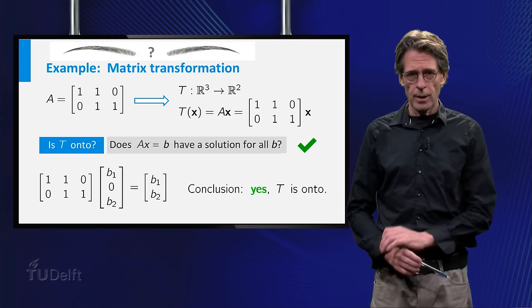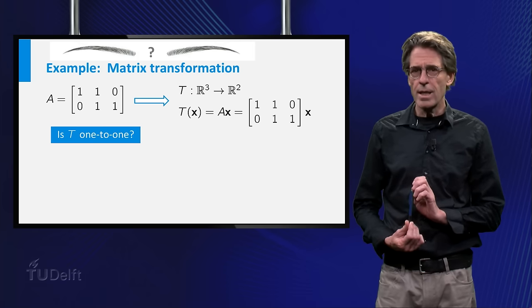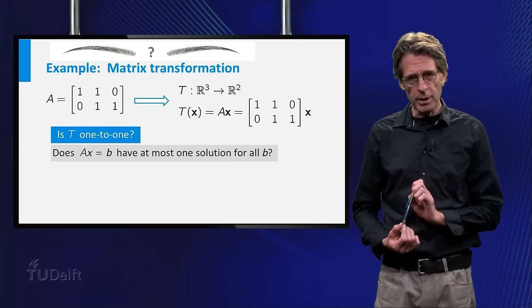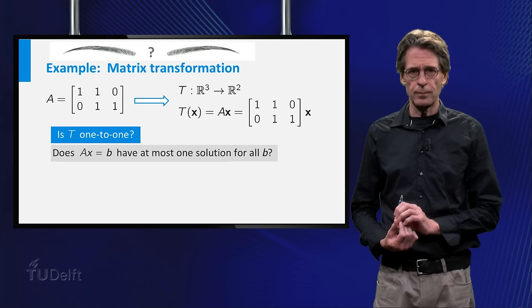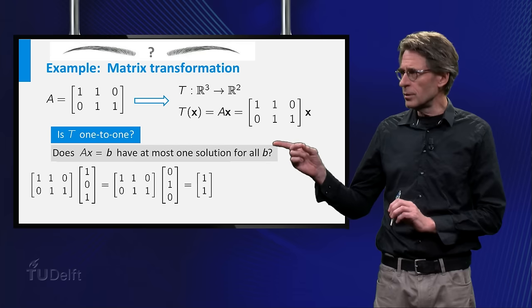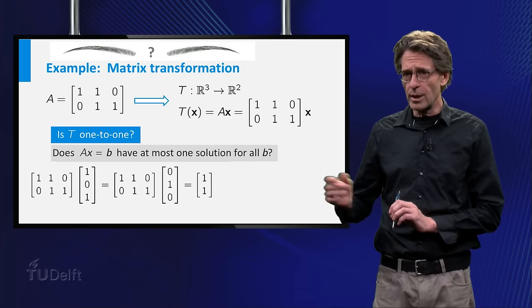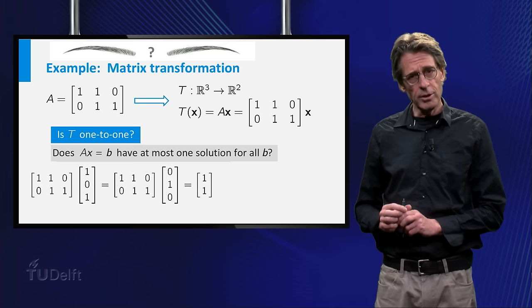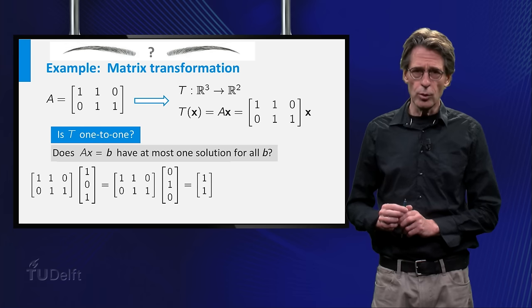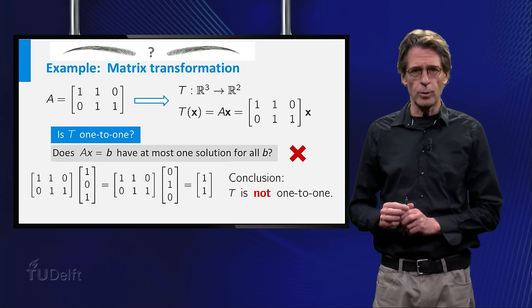Now about the other property. Is t 1 to 1? That is, has the equation t of x equals b always at most one solution? The specific choice on the slide shows that for the vector b equals 1, 1, the equation t of x equals b has at least two solutions. Conclusion, t is not 1 to 1.